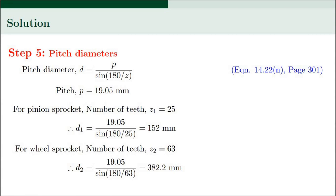In Step 5 we determine the pitch diameters of the sprockets. The relation (equation 14.22N, page 301) is D = P / sin(180° / Z). For the pinion sprocket with Z1 = 25 and P = 19.05 mm, D1 = 152 mm. For the wheel sprocket with Z2 = 63, D2 = 382.2 mm.